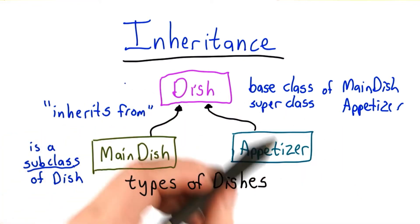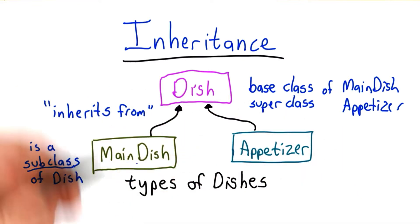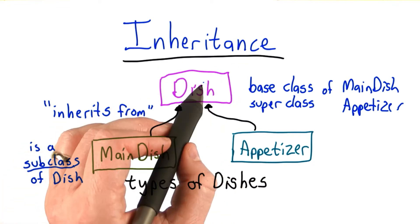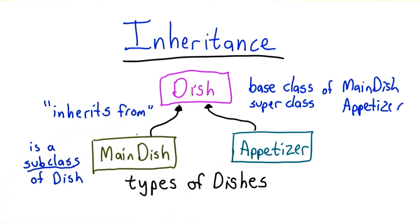There's a lot of different terminology people use to talk about this. But the important thing to understand is that we're building these subclasses, main dish and appetizer, which are special types of dishes, by starting from the dish type and adding some extra behavior to it.